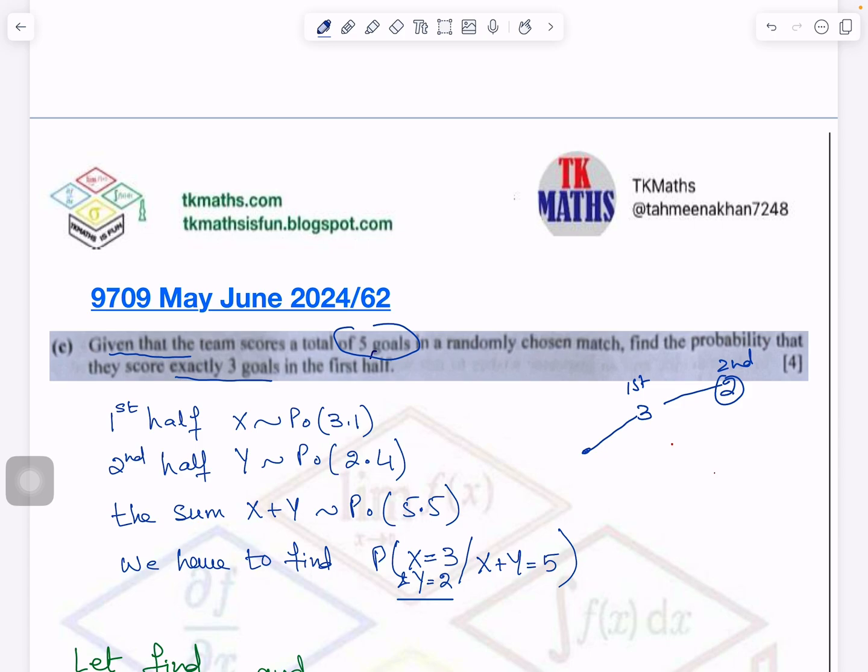Because otherwise it could be maybe the first half has 1 goal, second half has 4 goal, maybe the first half has 0 goal, second half has 5 goal or the condition which can add up to 5. So we have to consider the case when the first half has 3 goals because it is given to you here. So second half has 2 goals and that is why I have written this condition here.